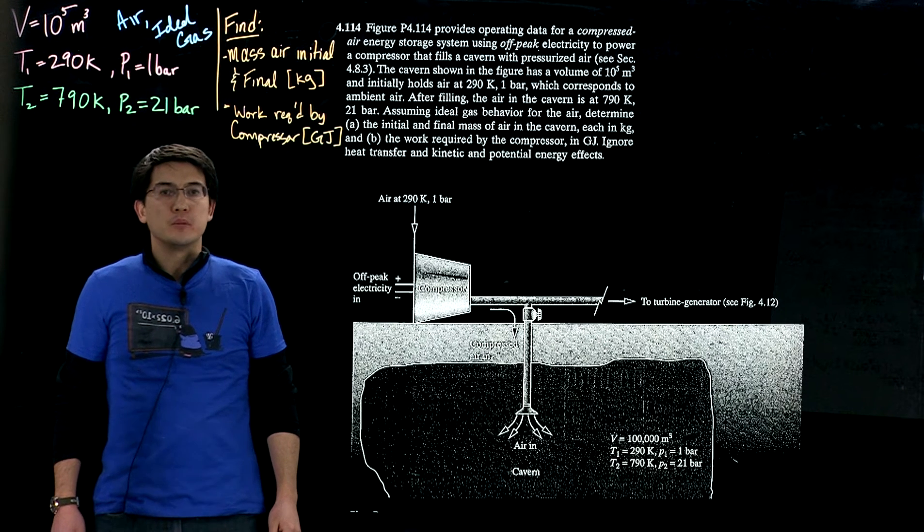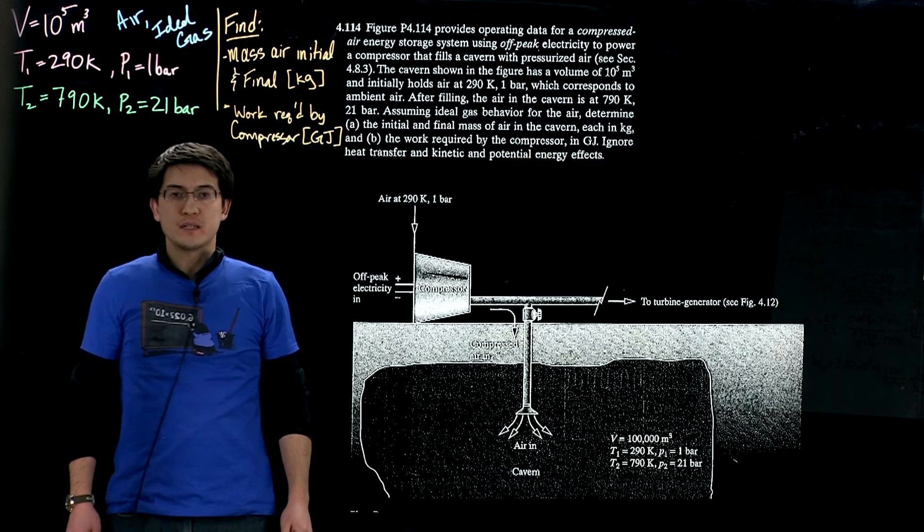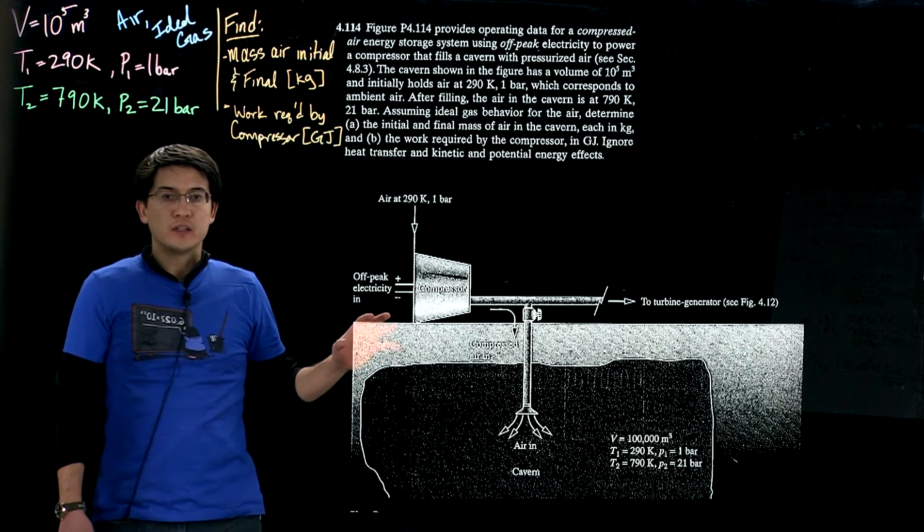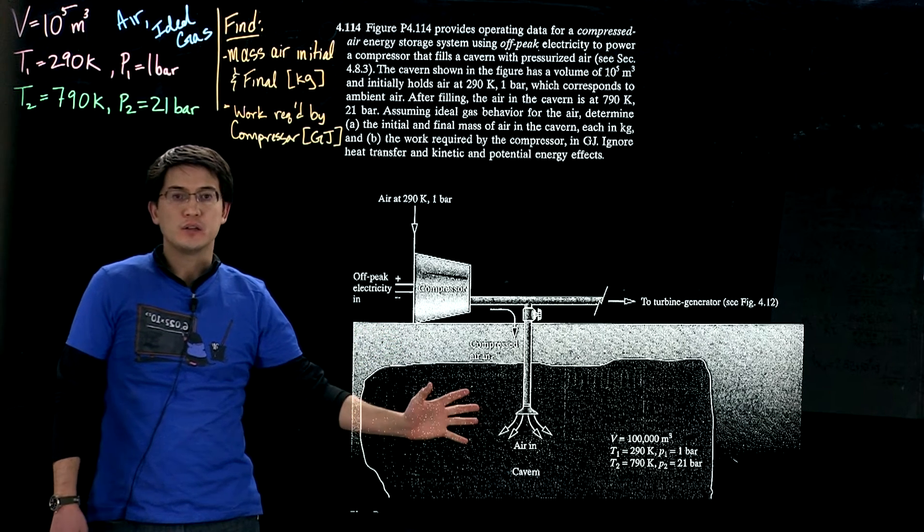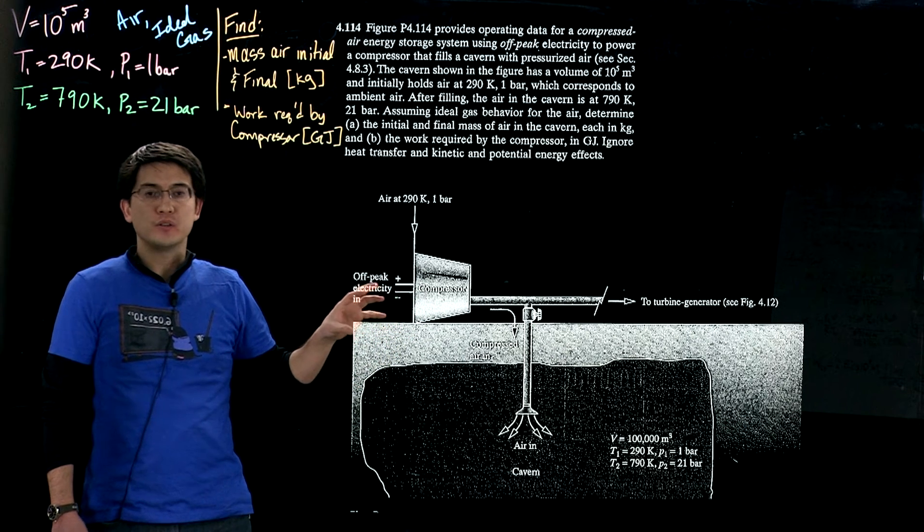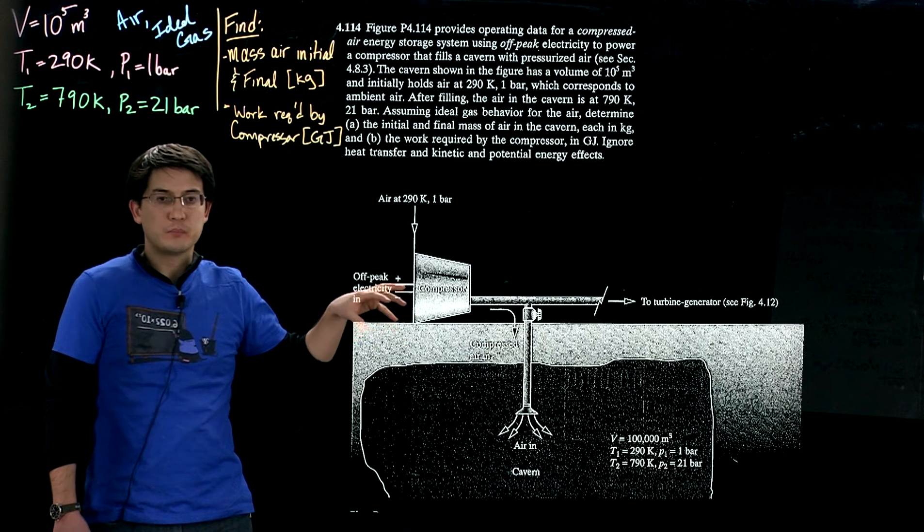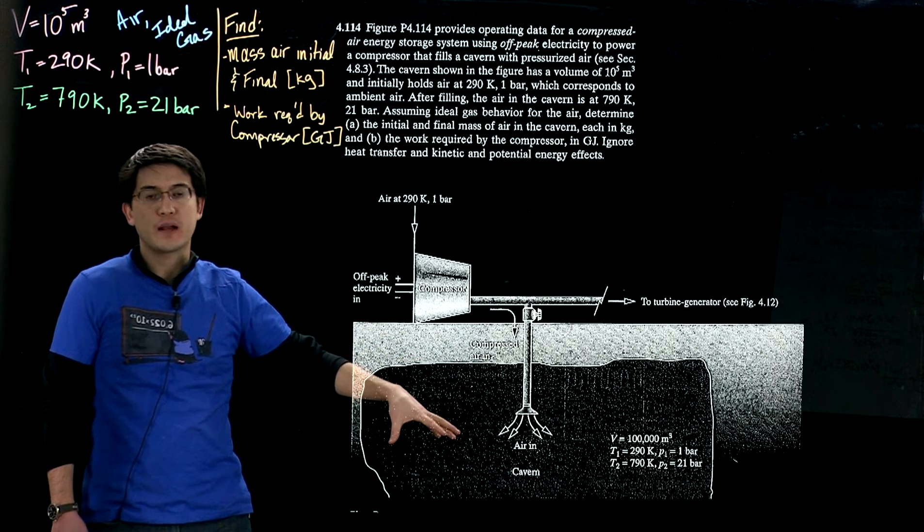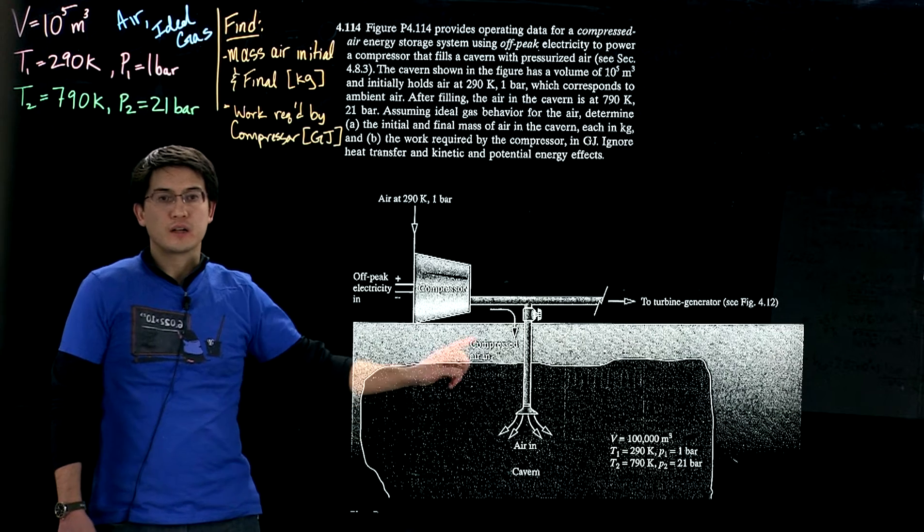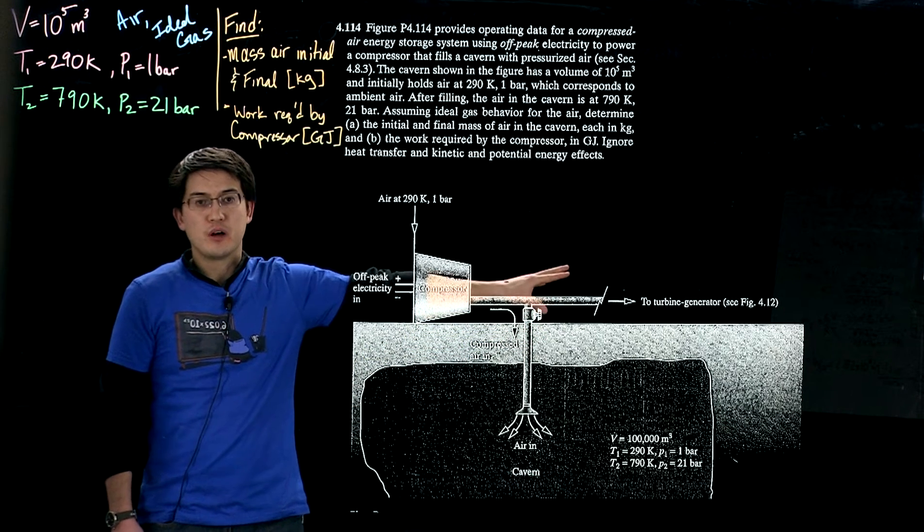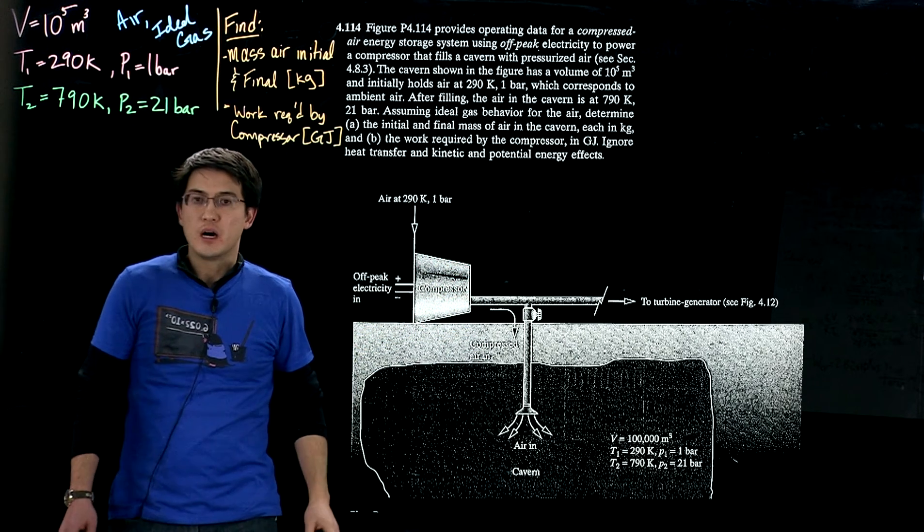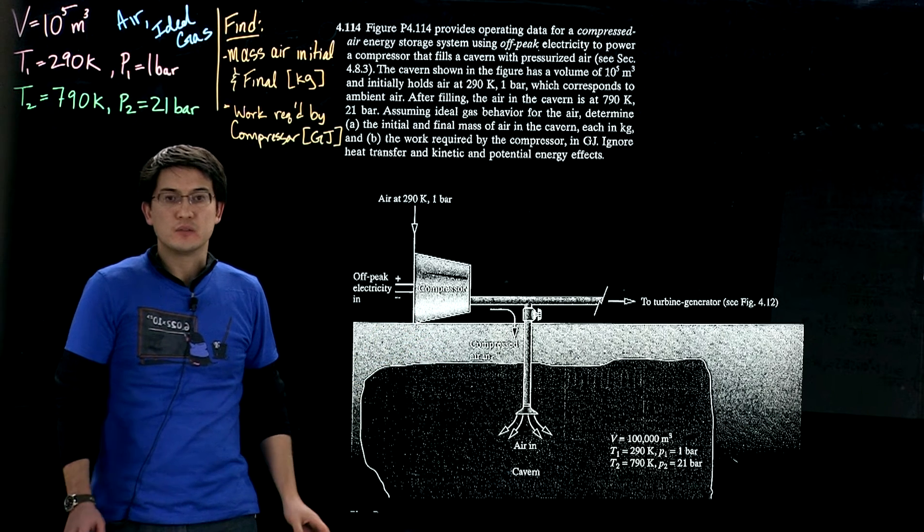This is problem 4.114, a single inlet transient state problem. We're looking at an energy storage system using a cavern and a compressor that takes ambient air during off-peak hours. The energy is used to turn on the compressor to pump air into the cavern, pressurize it so that during on-peak hours, we can use the pressurized air to turn a turbine and generate electricity to help power devices and the grid during high-peak electricity use hours.